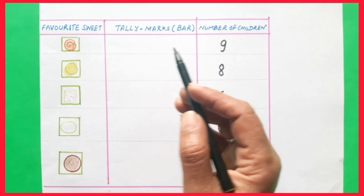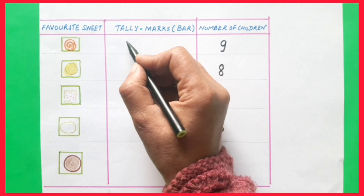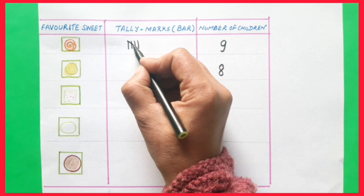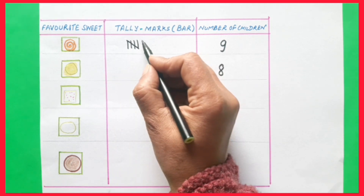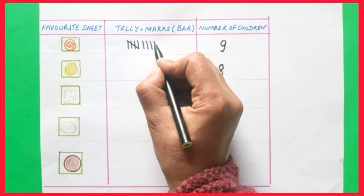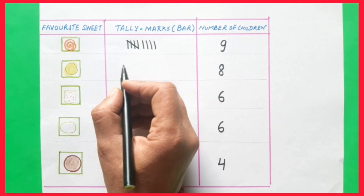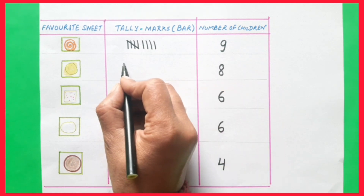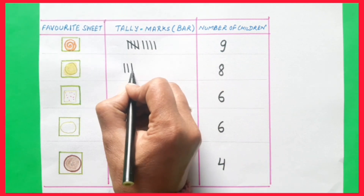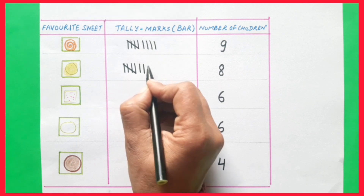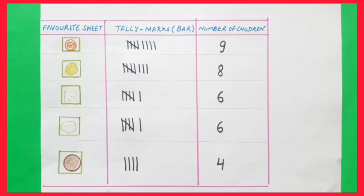Now, the children liking jalebi are nine. So we write four vertical lines and one diagonal line for five, then six, seven, eight, nine. In this way, we will write the number of children liking laddu, which are eight — one, two, three, four, five, six, seven, eight. In this way, we will write all the tally marks.